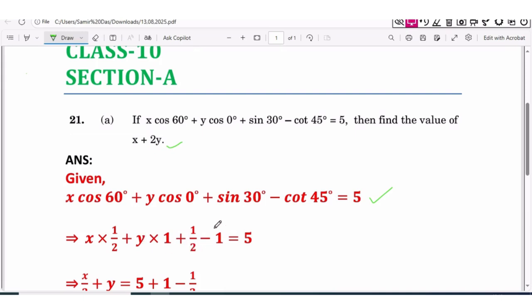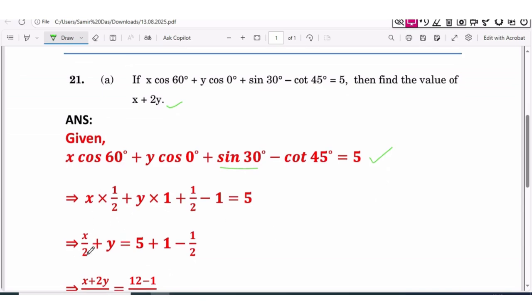Plus value of sin 30° is 1/2, minus value of cot 45° equals 1, so minus 1 equals 5. Now simplifying: x/2 + y into 1, y equals 5.